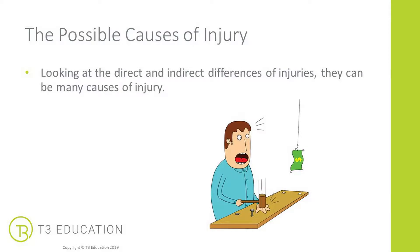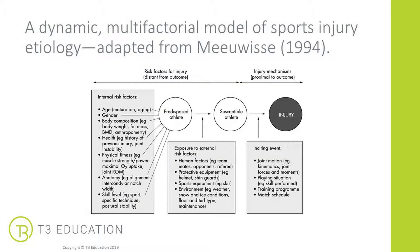When looking at the possible causes of injury, direct and indirect is an overall umbrella, but there are many reasons why injuries can occur. This model of sports injury etiology was adapted from Meijer-Reese in 1994, before the Munich Consensus. What's really useful about this model is it shows those risks of injury and how internal or external factors can relate to or cause a type of injury. Let's look at each section in a little more detail.